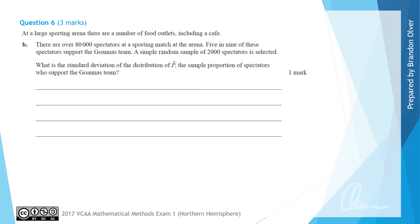For part B, there are over 80,000 spectators at a sporting match at the arena, and we are told that five in nine of these spectators support the Goannas team. So the p-value for the proportion of supporters of the Goannas team at the event is equal to five in nine.